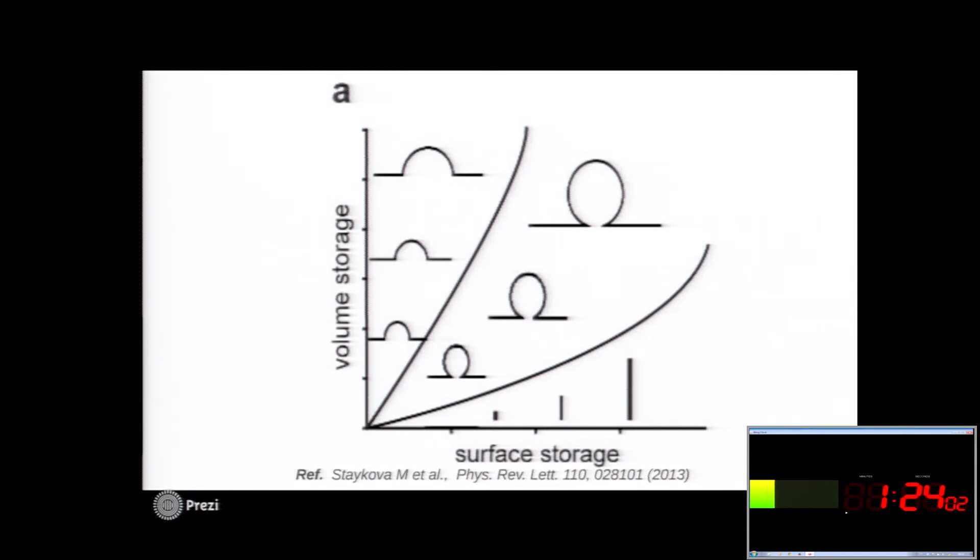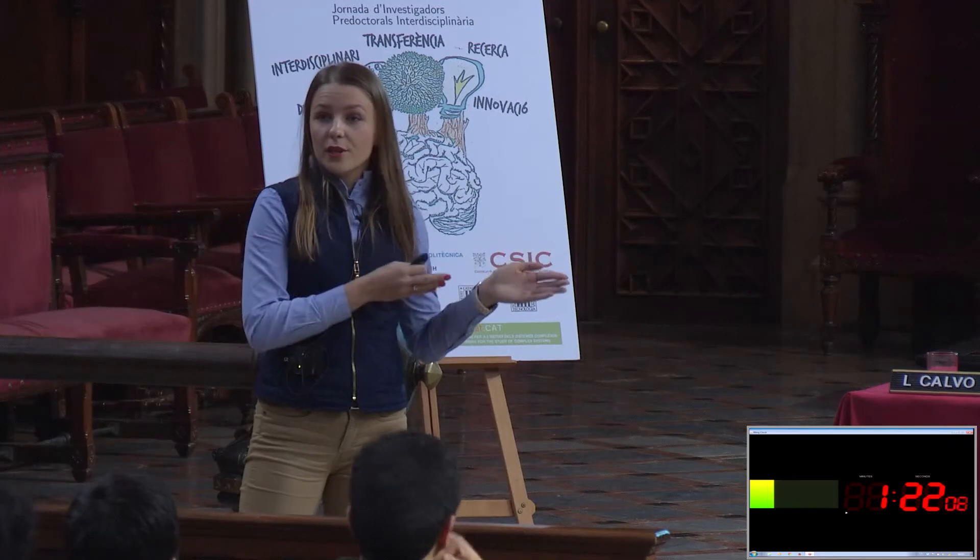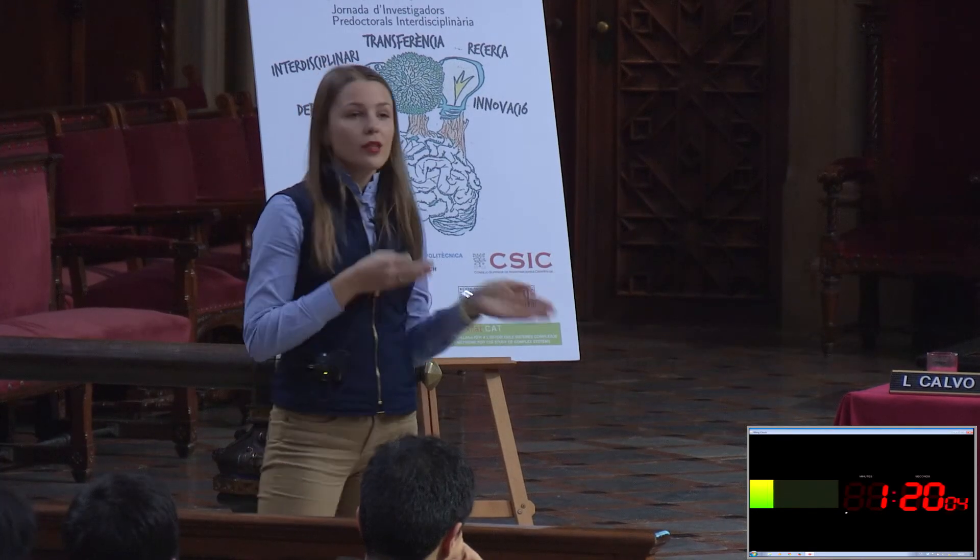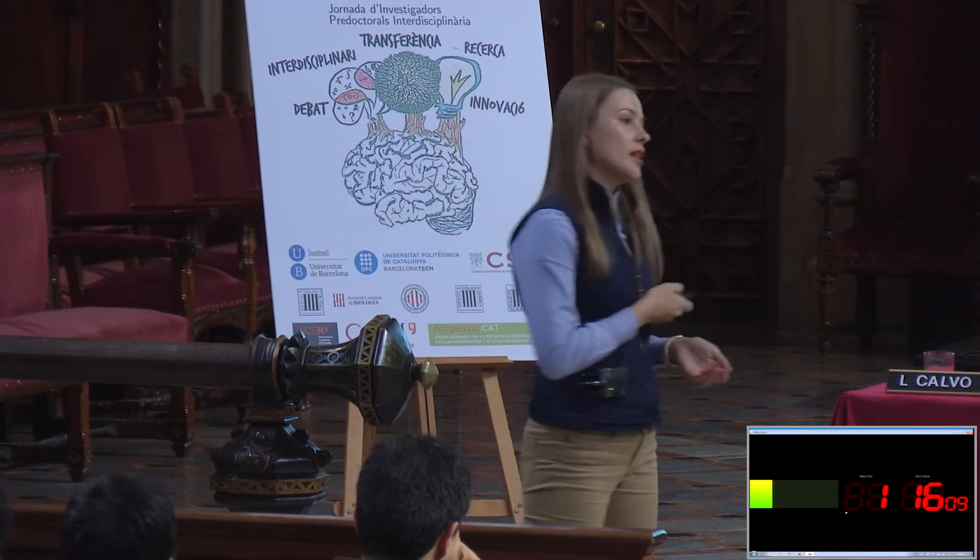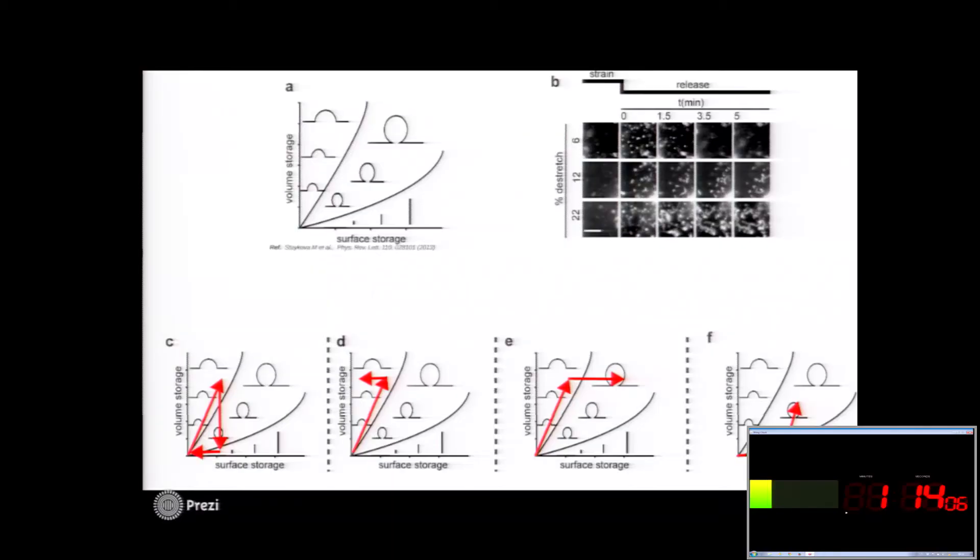So if that was the case, then our reservoirs that you could see in the beginning should indeed be tubular invaginations. So we performed additional experiments, and indeed we were able to observe tubular structures, meaning that our hypothesis was correct.